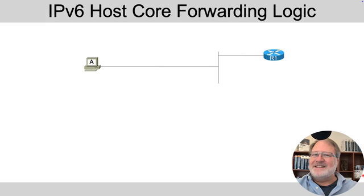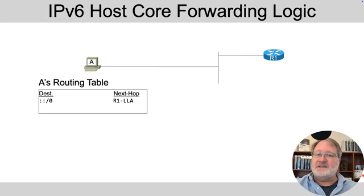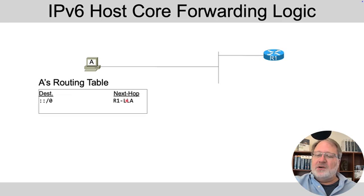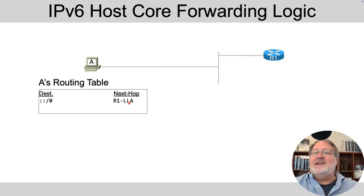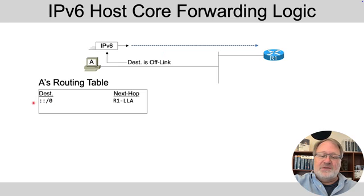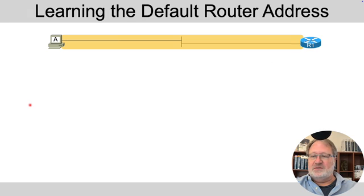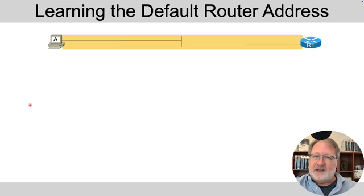Now let's talk about hosts and the default router and a default route. For IPv6, a host like host A is going to have a default route represented by double colon slash zero — the prefix that represents all addresses. Packets that don't match any other routes in A's routing table will match this route. That route will list some router's link local address as the next hop. When a destination is off-link, host A will send those packets to a router using this default route. This uses different logic and a different mechanism than IPv4, starting with A learning about routers directly from the routers on the link.